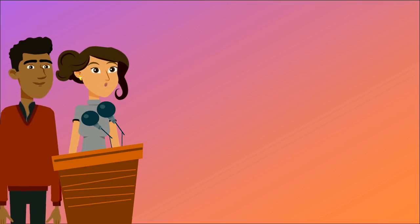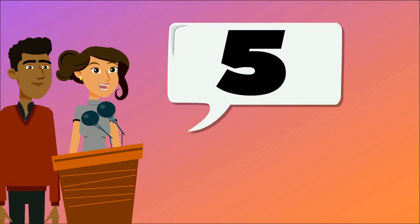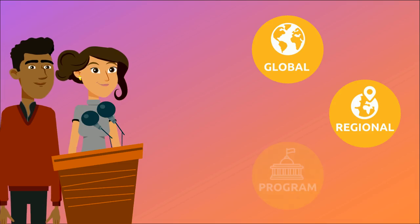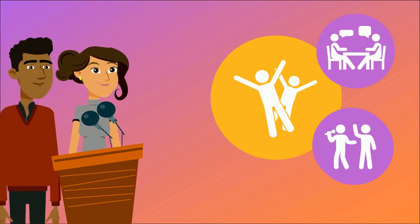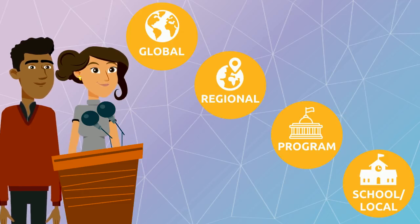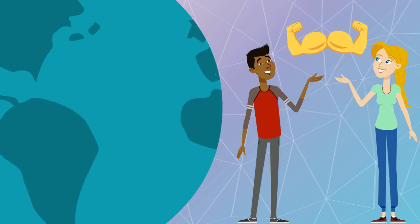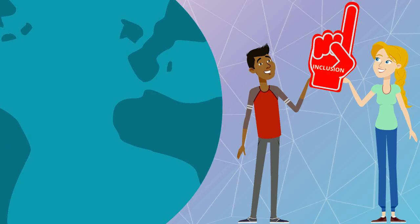The Special Olympics Lead to Include project is a five-year project that will develop a structure of youth summits at the global, regional, program, and school and local levels to train youth as not only youth leaders, but as trainers of other youth leaders. Through the Lead to Include project's multi-tiered youth summit approach, youth leaders are leading youth summits around the world to empower and educate others to support the creation of more inclusive communities.